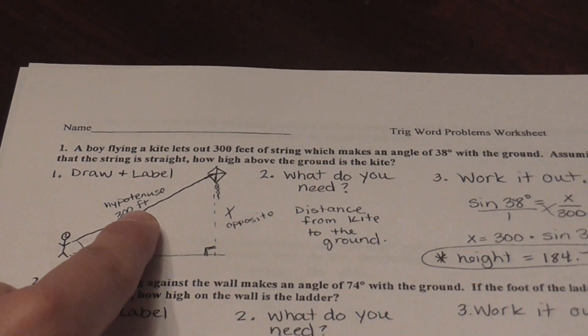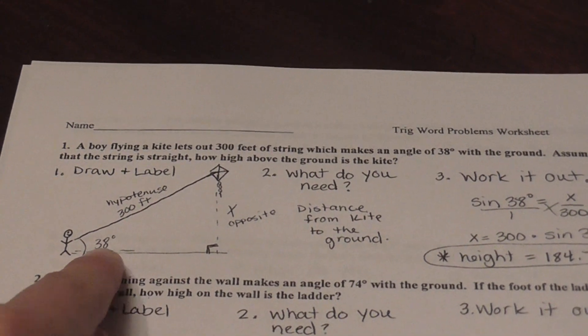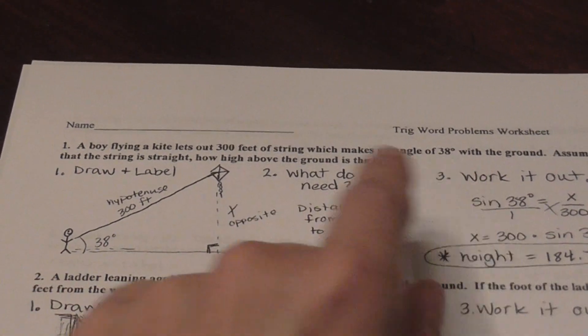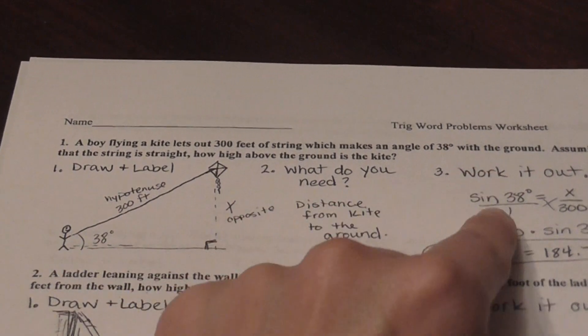I have a hypotenuse and an angle. I want the opposite side. So what uses opposite and hypotenuse together is sine.